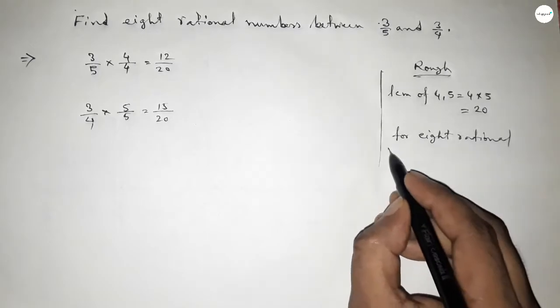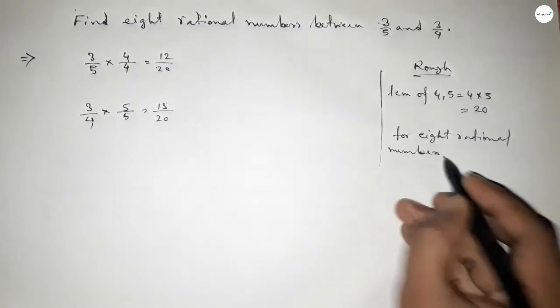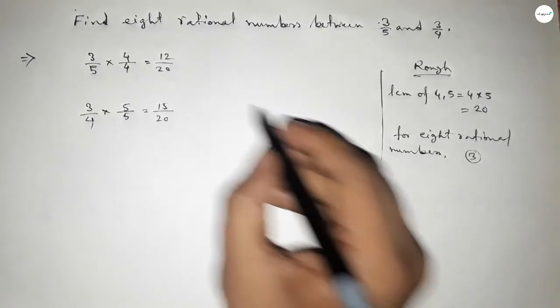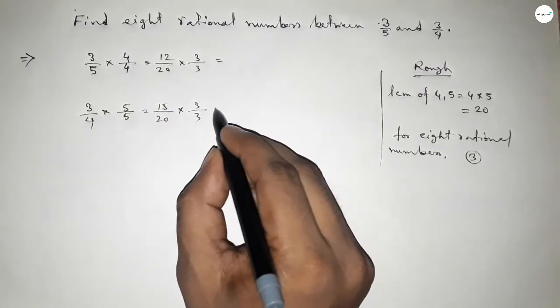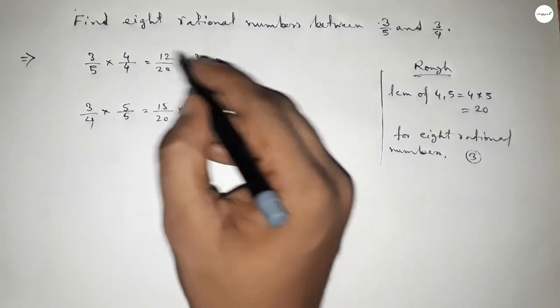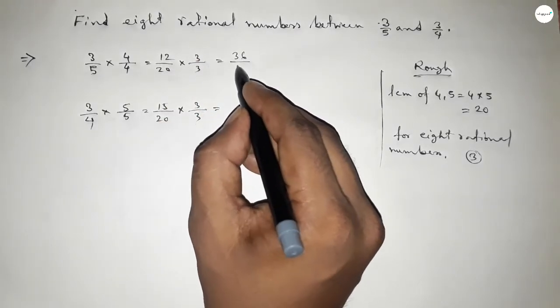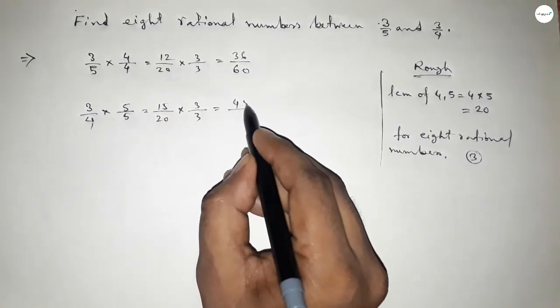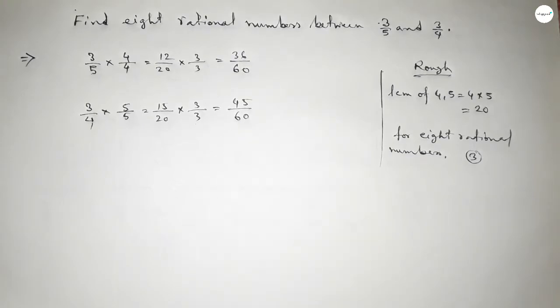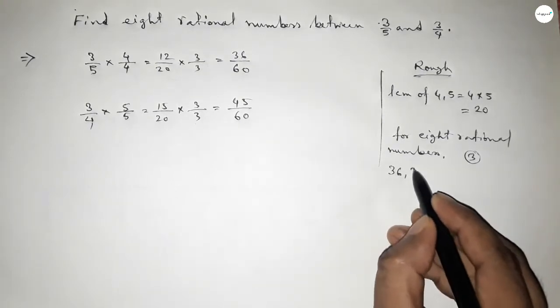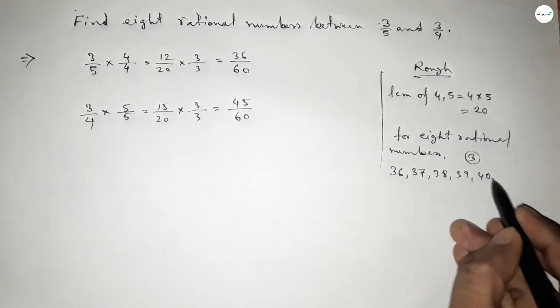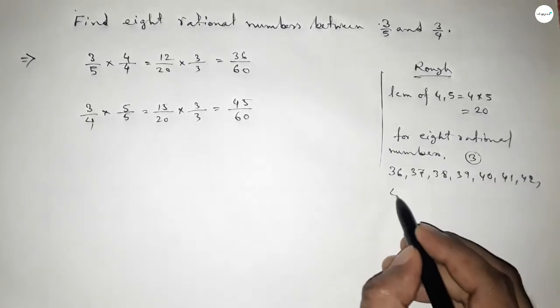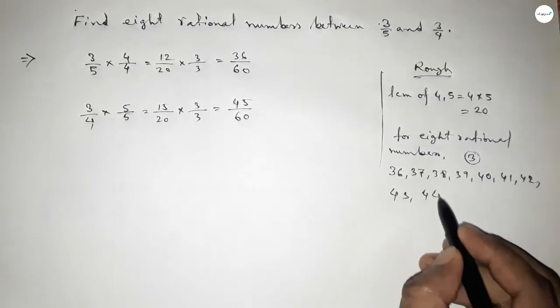Now for this particular sum, for finding eight rational numbers between 3 over 5 and 3 over 4, we have to multiply both numbers by 3. So this is 36 over 60 and this is 45 over 60. Now between 36 to 45 we can find eight natural numbers, and by these natural numbers we can form eight rational numbers.